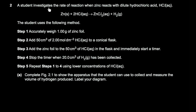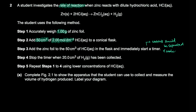Next, a student investigates the rate of reaction when zinc reacts with dilute hydrochloric acid. The method: accurately weigh 1 g of zinc foil, add 50 cm³ of 2 mol/dm³ HCl to a conical flask, add the zinc foil and immediately start a timer. A problem with this method is that the contents should be kept separated initially — the moment zinc is added, hydrogen gas is produced and some will be lost before the timer starts.